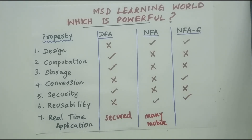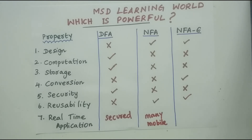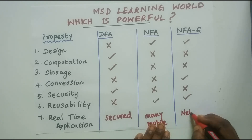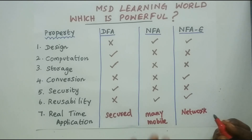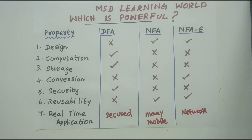For NFA-epsilon, it is most efficient when you want to process applications without any user input. For example, in Wi-Fi and modem applications, whether the user is logged in or not, once the machine is on, all users continuously receive and send packets from the node. Since the Wi-Fi has to be processed even without user input, such network applications — where the machine processes regardless of whether a user is actively giving input — are ideal for NFA-epsilon.